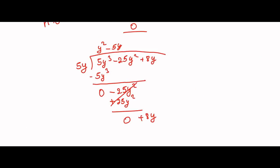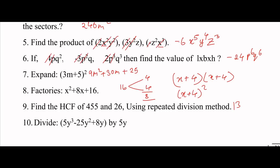Bring down 8y. 5y into 8y gives 1 with remainder 3y. So the quotient is y² - 5y + 1 and the remainder is 3y. That completes all questions. Okay, thanks for watching.